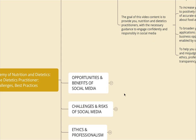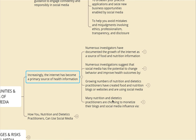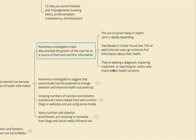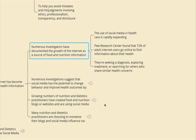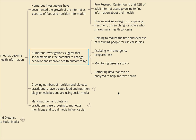The internet has become a primary source of health information. The use of social media in healthcare is rapidly expanding. Pew Research Center found that 72 percent of internet users go online to find health information — seeking a diagnosis, exploring treatment, or searching for others who share similar health concerns. Social media has the potential to change behavior and improve health outcomes by helping reduce the time and expenses of recruiting for clinical studies, assisting with emergency preparedness, monitoring disease activity, and gathering data to improve health.